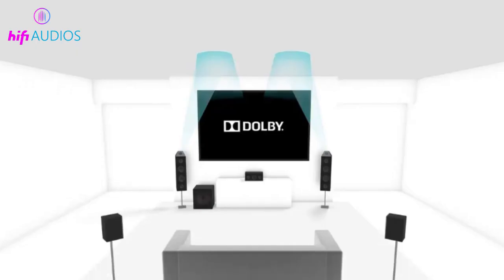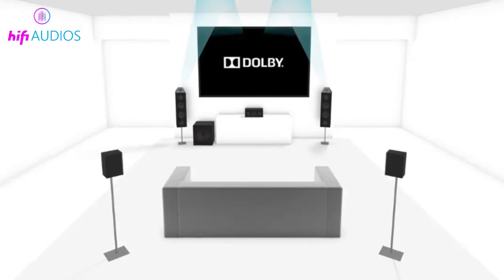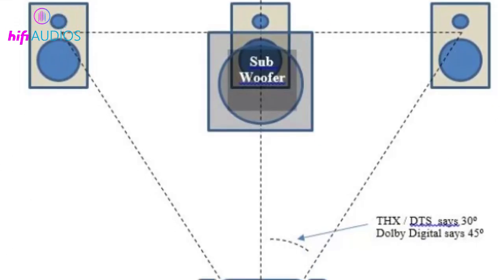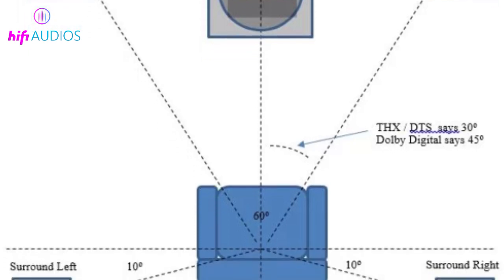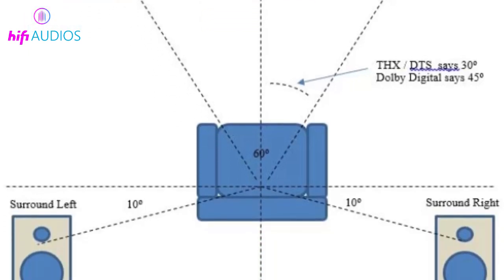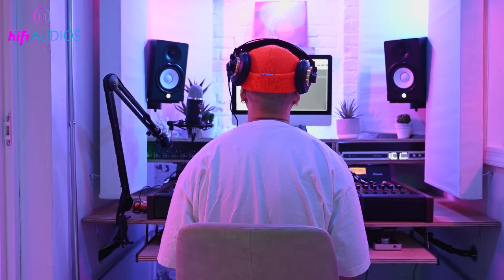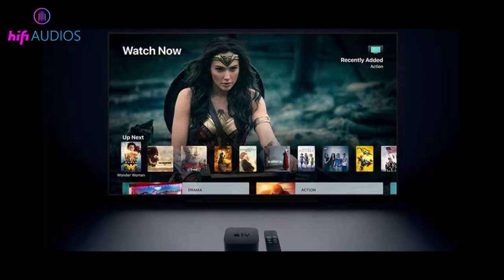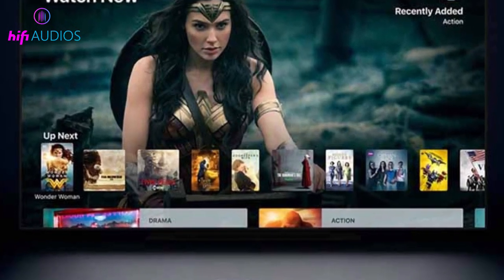Dolby Digital is a surround sound audio format that uses up to 5.1 channels of audio. It uses a technique called channel-based encoding to deliver discrete channels of audio, such as left, right, center, and surround. This allows for a more immersive audio experience, as sounds can be placed in specific locations in the room. It is commonly used in movies, television, and streaming content.